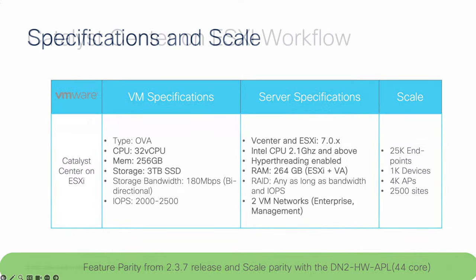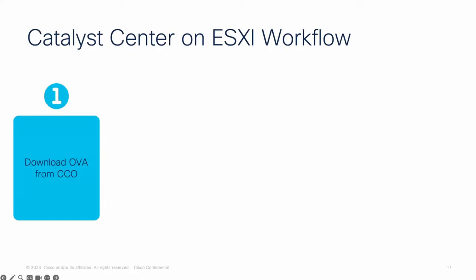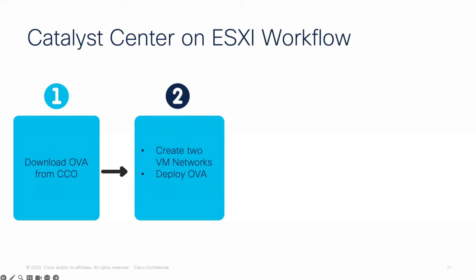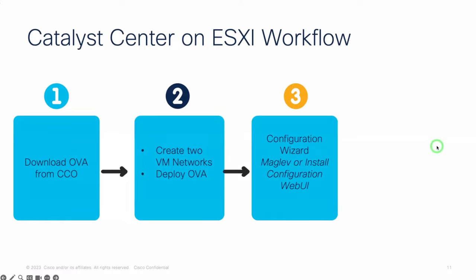Moving into the workflow for creating a new VM on ESXi — first, download the OVA file from CCO. This will become available quite soon. It is about 35 gigabytes in file size, so please be patient. There are two options to deploy the OVA: manual installation using vCenter or standalone using the ESXi host client. It takes between 25 to 30 minutes. You will then move to the configuration wizard — either the Maglev CLI or the web UI installation wizard.